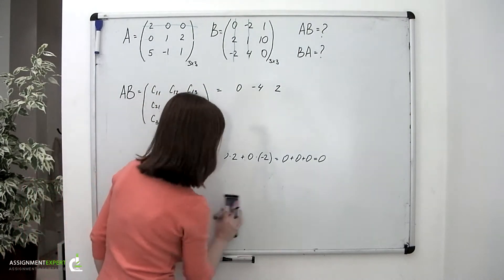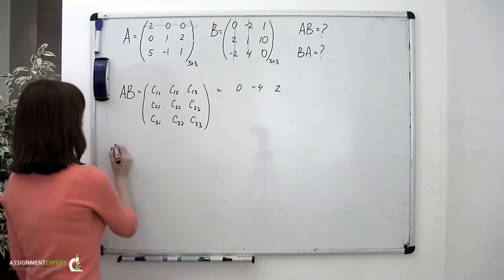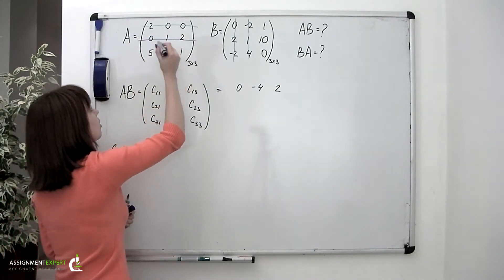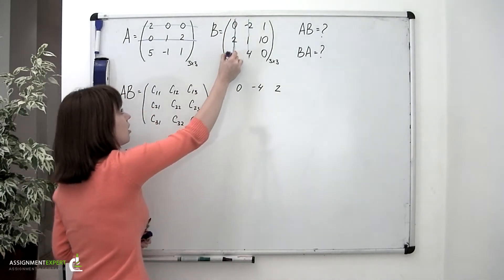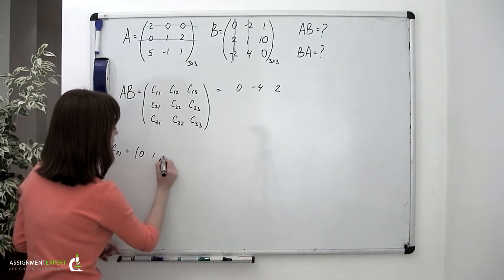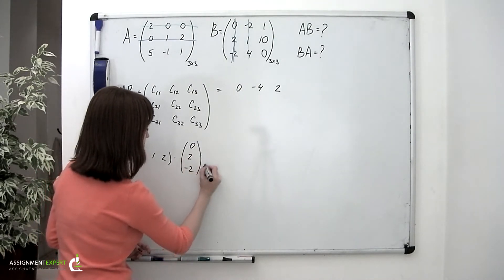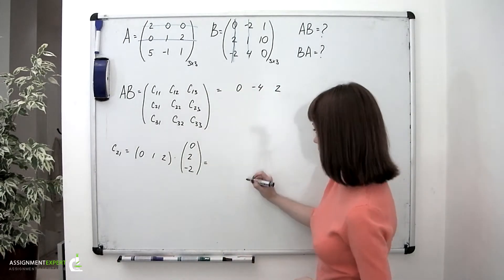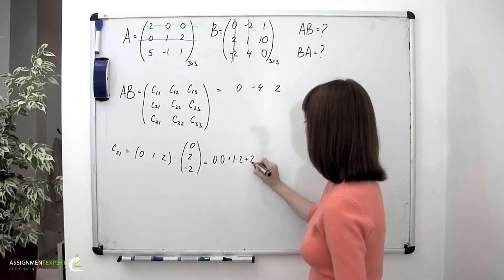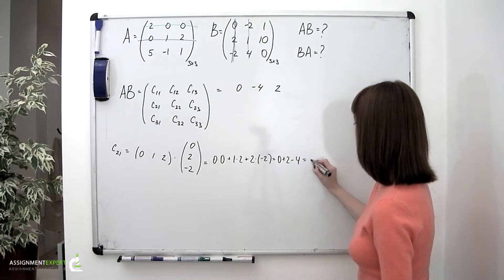Moving on to the second row. C sub 2,1 is found by multiplying the elements in the second row of the first matrix and the first column of the second matrix. So it goes 0, 1, 2 multiplied by the column 0, 2, and negative 2. That is equal to 0 times 0 plus 1 times 2 plus 2 times negative 2, which is 0 plus 2 minus 4, which equals negative 2.